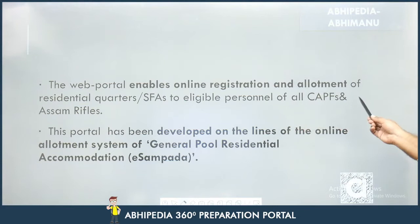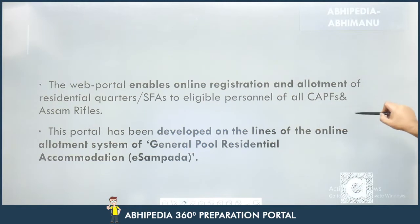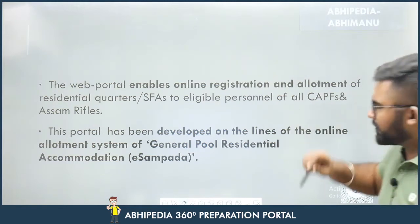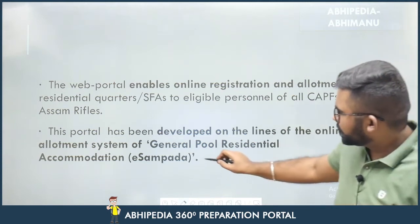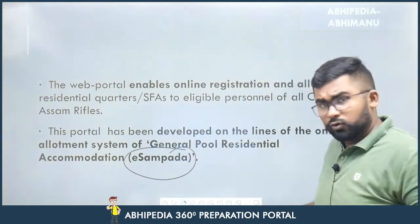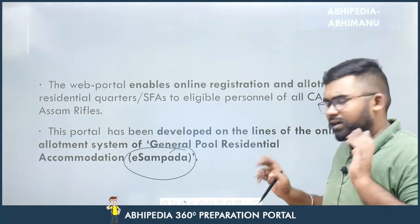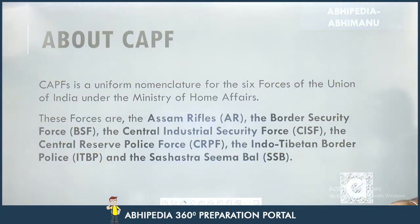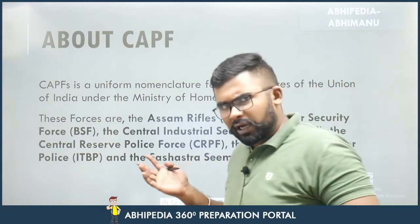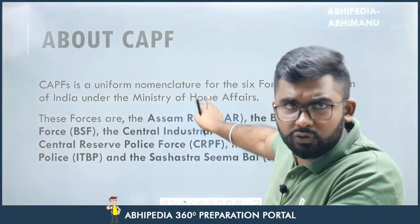The web portal enables online registration and allotment of residential quarters and Separated Family Accommodations (SFAs) to eligible persons of all CAPFs and Assam Rifles. This portal has been developed on the lines of the GPRA of e-Sampada. We are focusing on e-Awas in this video — it is the specific portal made for CAPF.